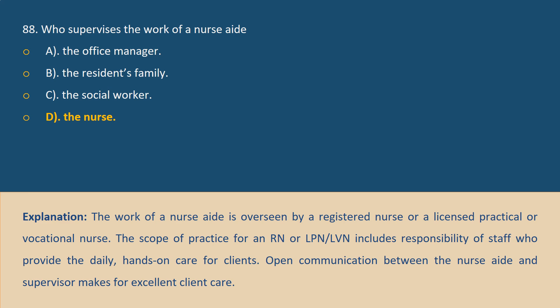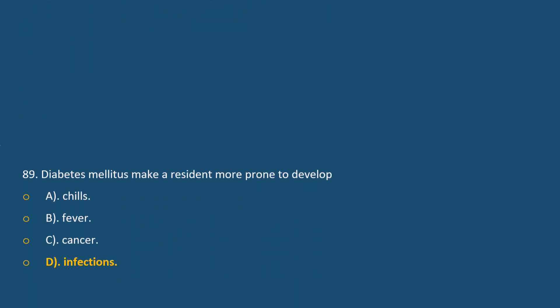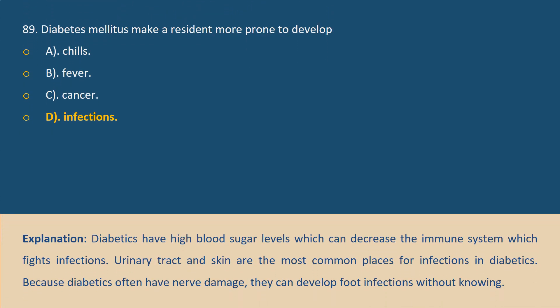Question 89: Diabetes mellitus makes a resident more prone to develop: A. Chills, B. Fever, C. Cancer, D. Infections. Answer D. Explanation: Diabetics have high blood sugar levels which can decrease the immune system. Urinary tract and skin infections are the most common in diabetics. Because diabetics often have nerve damage, they can develop foot infections without knowing.